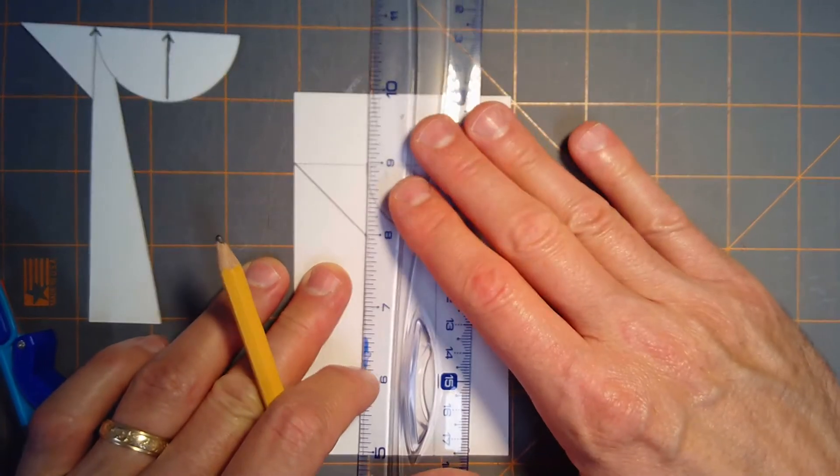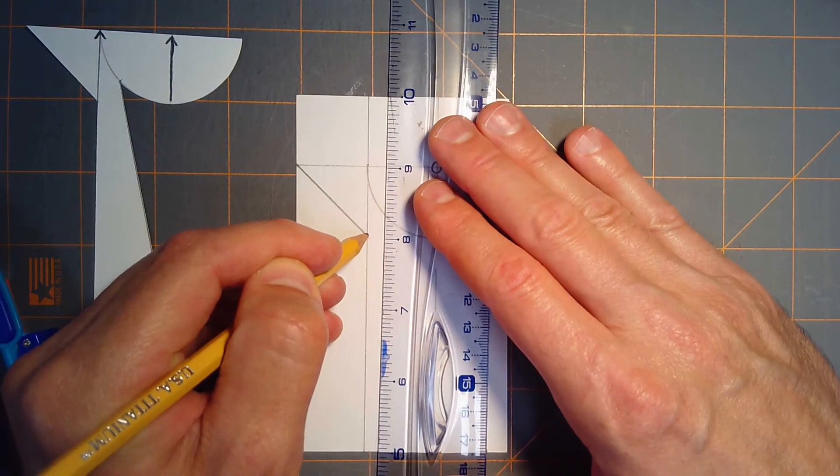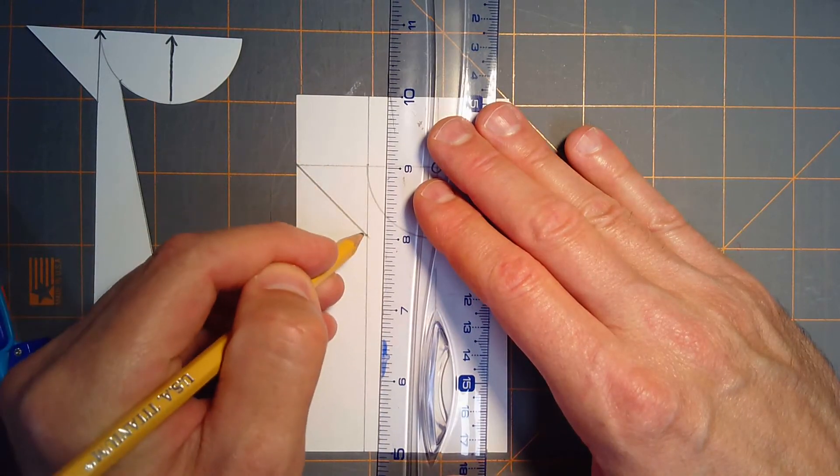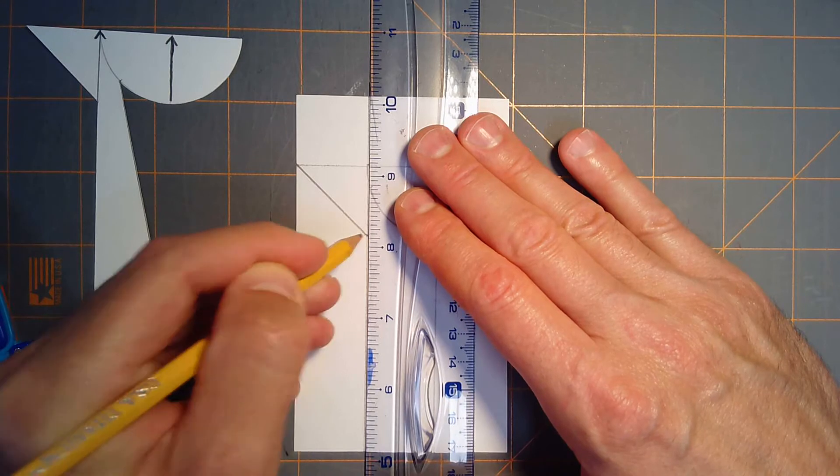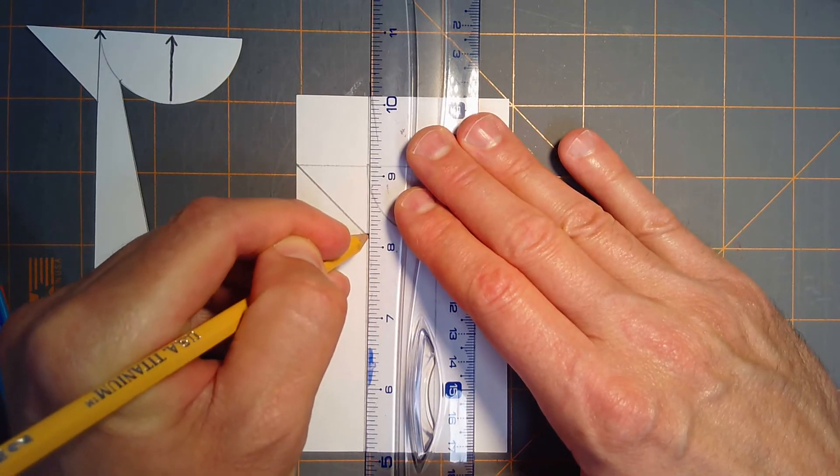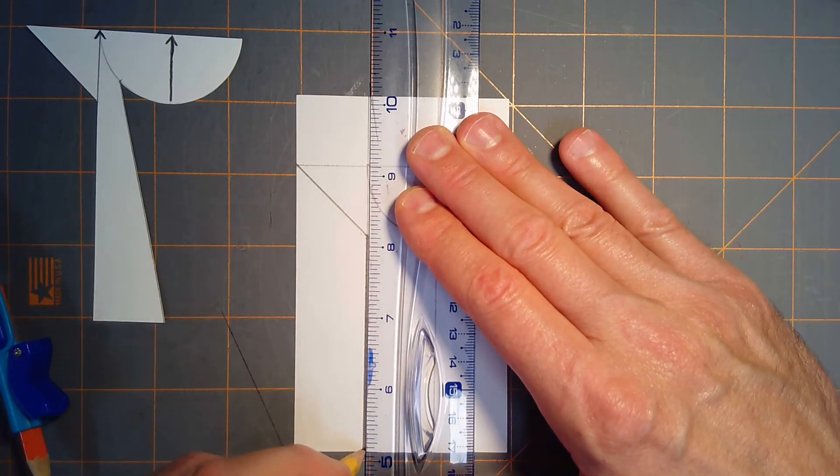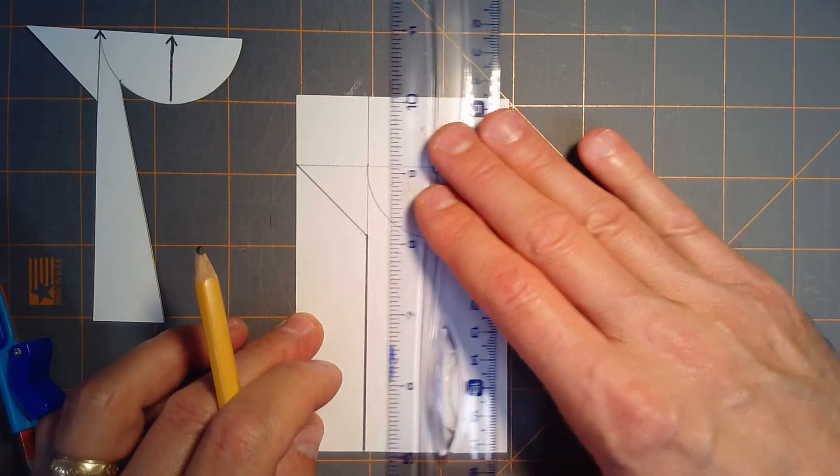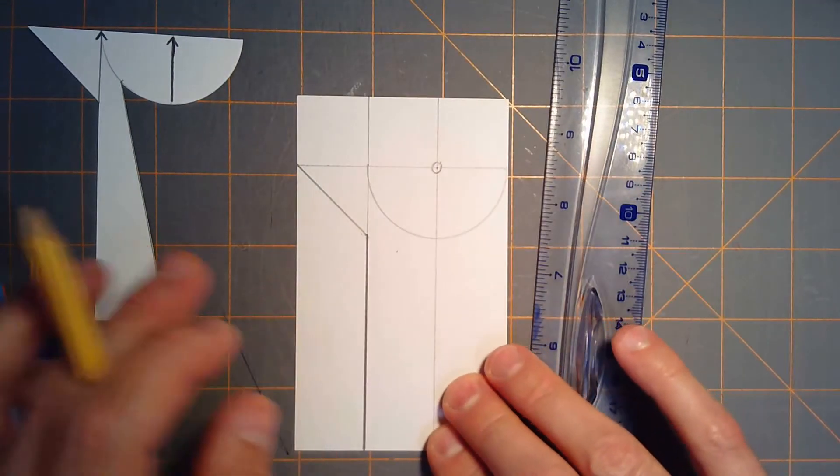Now I'm going to measure down from the bottom of this isosceles right triangle and just darken in this here. That's going to begin to form the handle of the tomahawk.